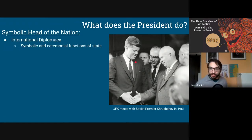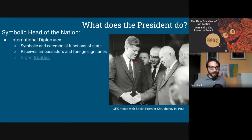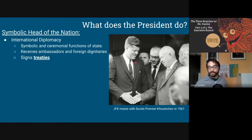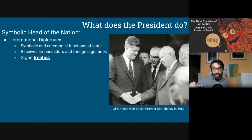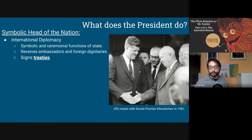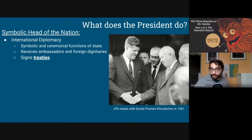When something big and important is happening, it's usually the president you expect to be there. When ambassadors and foreign dignitaries come to the country, it's the president who will receive them if they're really important. This manifests as a concrete power in that the president is the person who signs treaties with foreign nations — whether trade treaties, where we're agreeing to exchange certain goods, or peace treaties resolving armed conflict.